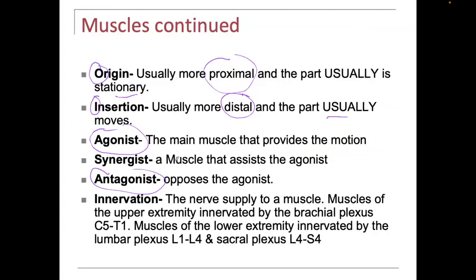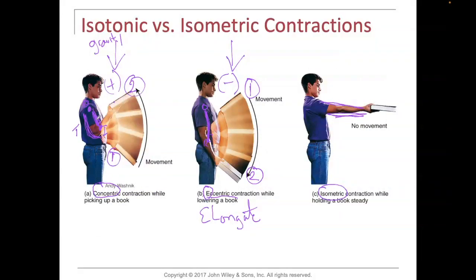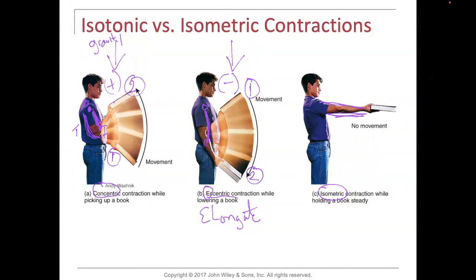A synergist is a muscle that helps the agonist. If the biceps is flexing the elbow, any other elbow flexor — like the brachioradialis or the brachialis — would be a synergist. If the triceps is the main elbow extensor, then the anconeus would be named as its synergist.